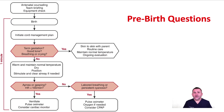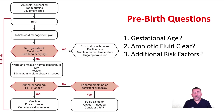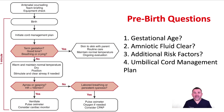Let's look at the top part of the NRP algorithm. As always we will start with the four pre-birth questions that we need to ask the obstetric provider: What is the expected gestational age? Is the amniotic fluid clear? Are there any additional risk factors? And what is the umbilical cord management plan?